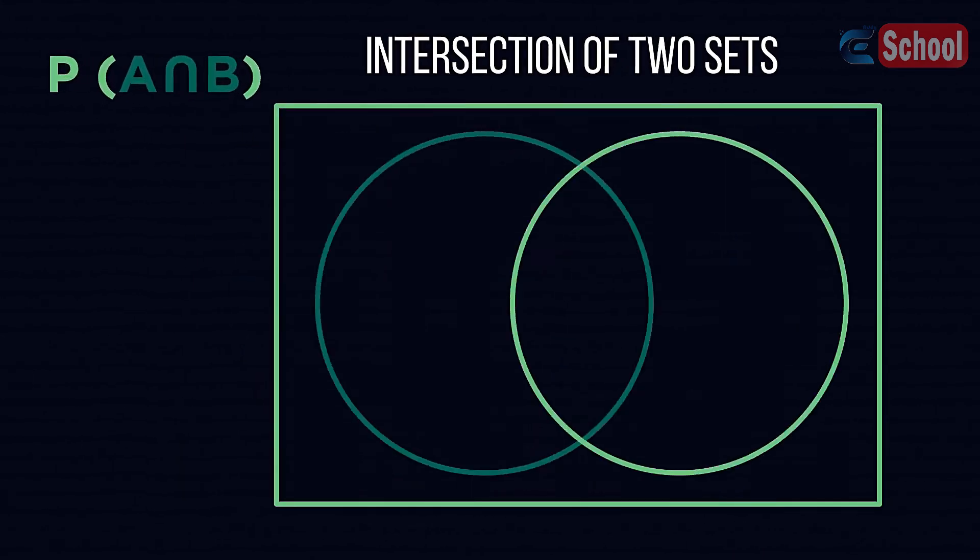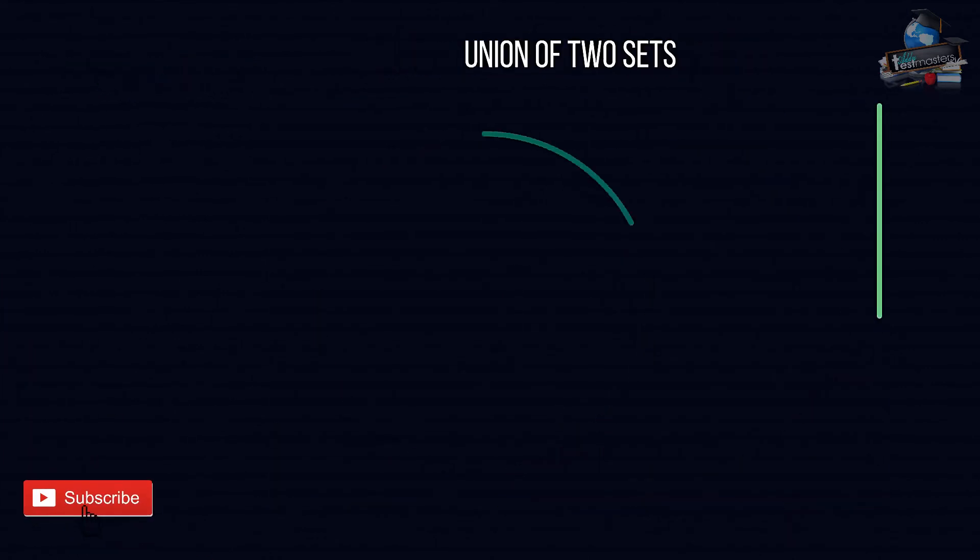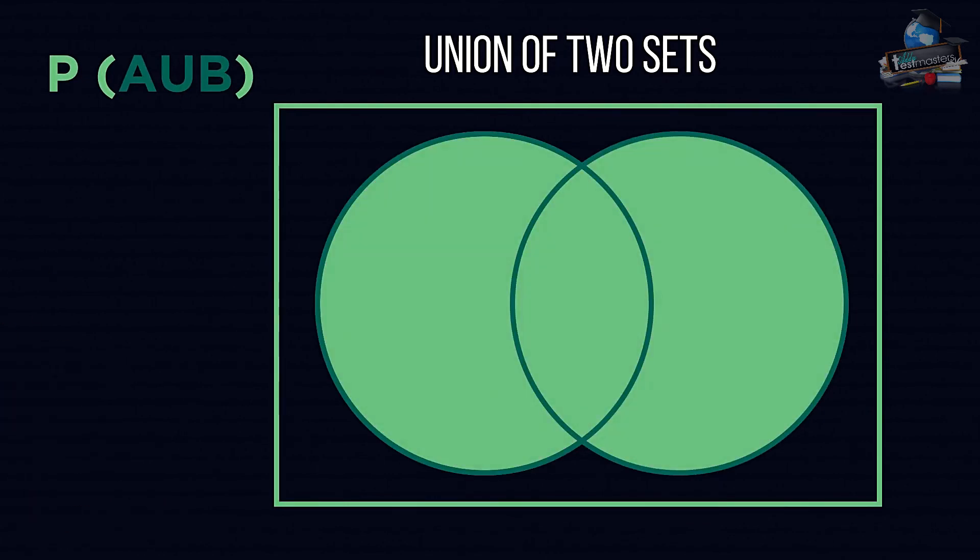Intersection, where we share values, on a Venn diagram is the central section. The probability of an object being in this section would be given the notation P(A) intersection B. Union, the set A or set B notation, looks like this on a Venn diagram. It has a larger area to choose from, because it only requires one or the other, not both. Typically, union probabilities are higher than intersection. The probability notation for this is given by P(A) union B.